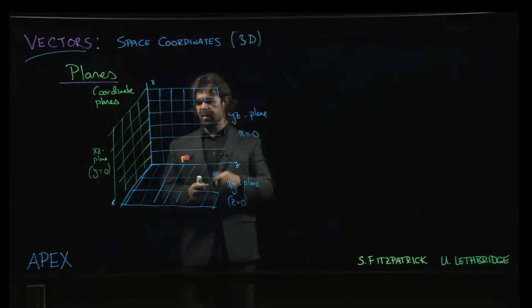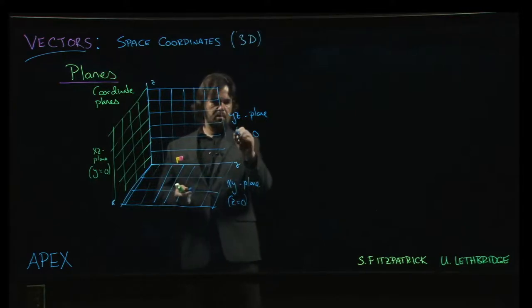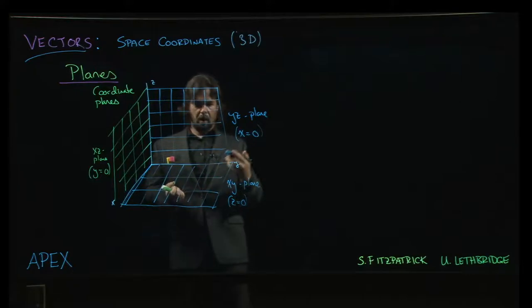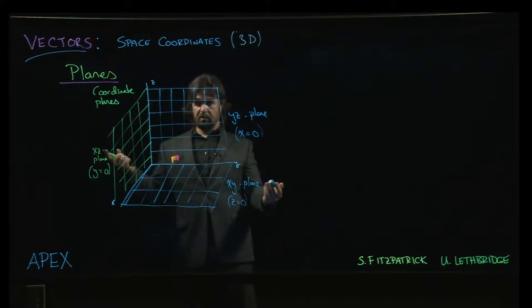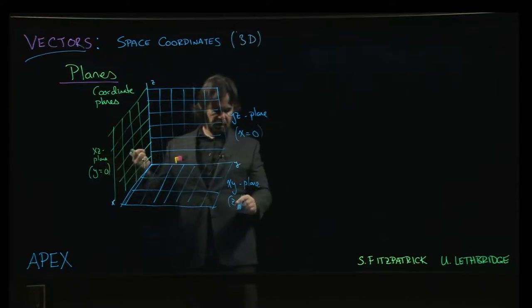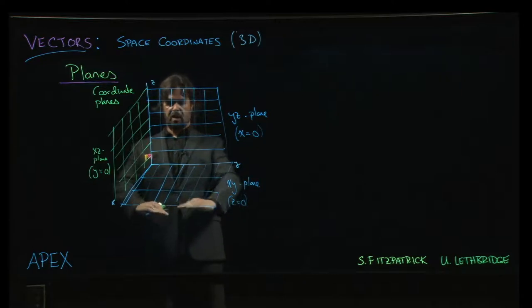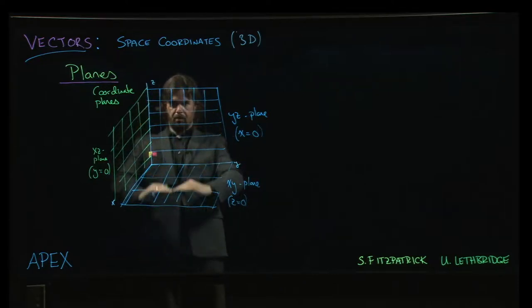And then after these, the next simplest planes that you can draw are the ones that are parallel to these coordinate planes. And those are given by setting one of the three variables equal to a constant. So if I change z equals zero and I change the zero to like a one or a two or a minus three,